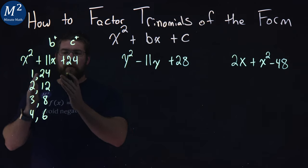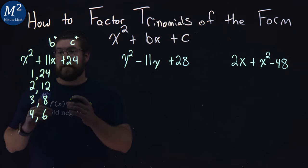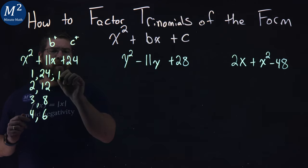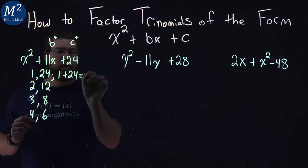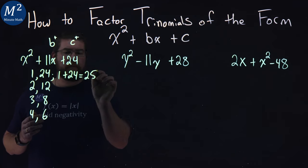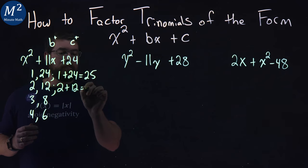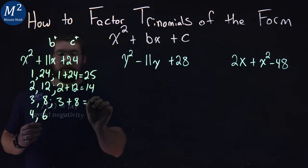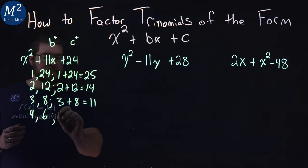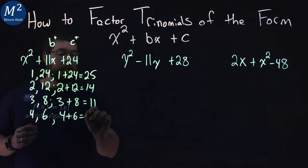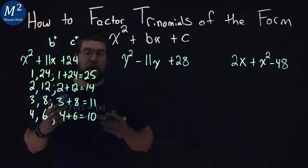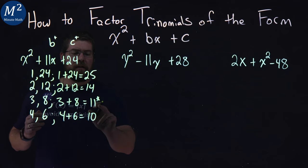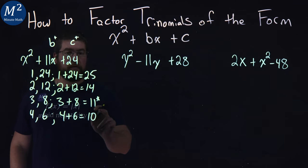So now I know all the factors that multiply to be 24. Now we want to add them. 1 plus 24, what does that equal? That's 25. 2 plus 12 gives me 14. 3 plus 8 gives me 11. And 4 plus 6 gives me 10. Do any of these numbers equal our b value? And yeah, right here, 11. Our b value is 11. And we're good.